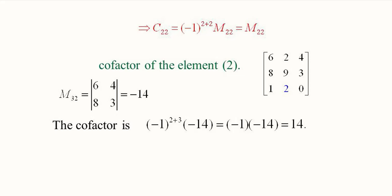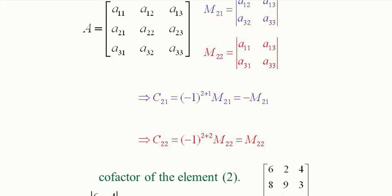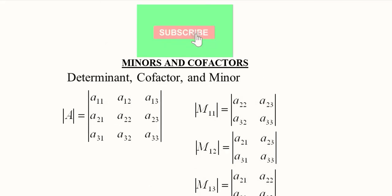This is the connection between cofactors and minors. For example, minor M32 corresponds to the third row and second column, leaving elements 6, 8, 4, and 3. The minor evaluates to -14. Then the cofactor is (-1) raised to the power 3+2 multiplied by -14, which gives +14. So the cofactor is positive even though the minor was negative.